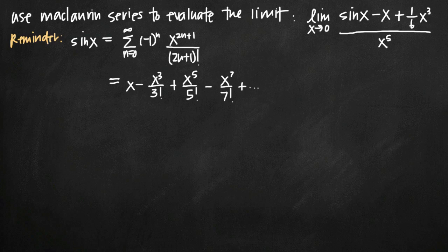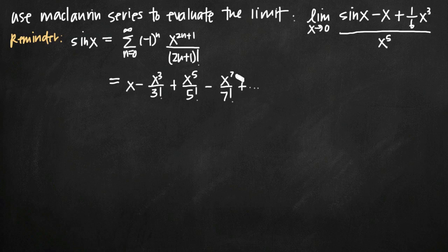As a reminder, I've written the Maclaurin series representation of sine of x, which is this infinite sum from n equals zero to infinity. I've also expanded this series to show the first several terms. If you ever don't have the Maclaurin series, you can figure it out by making a table — start with sine of x, take subsequent derivatives, plug in zero, and derive the first several terms. From those terms you can find the representation for the a-sub-n term in the summation notation.